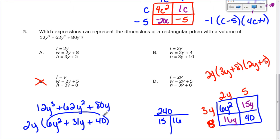Looking at the answer choices, the correct ones are 2y plus 5 and 3y plus 8. That's how we factor completely: look for a greatest common factor first, then factor what remains if you can. Sometimes after taking out a GCF the remaining polynomial is prime, but most of the time you can still factor it. Use the box method — multiply your first term times your last term to figure out how to split the middle term. We'll practice this tomorrow in class.